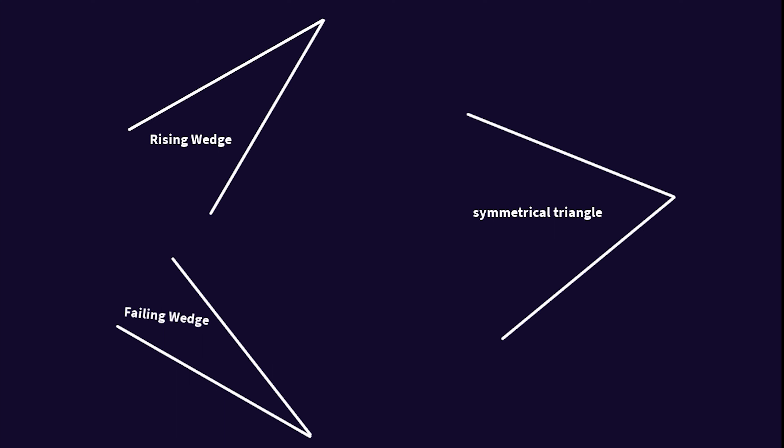Just a quick note for traders: do not mix up the wedge chart pattern formation with the symmetrical triangle pattern. They are different from each other. The rising wedge chart pattern's two trend lines will either point upward or point downward. But in the case of the symmetrical triangle pattern, it will not point upward or downward. The apex of the symmetrical triangle pattern will horizontally align to the midpoint of the two trend lines of the pattern.